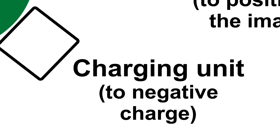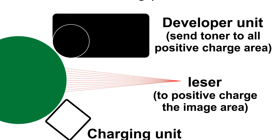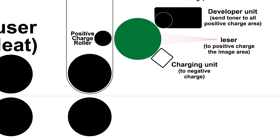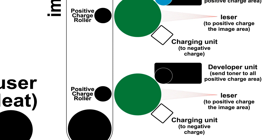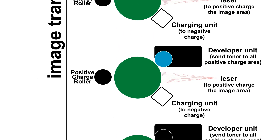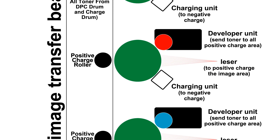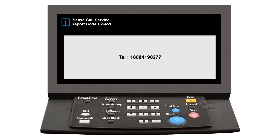Due to this issue the charging unit is unable to negatively charge the OPC drum, and the fully charged OPC drum attracts all toner from the developer unit and creates a solid image in the transfer belt. That's why the OPC drum uses a very large amount of toner without controller instruction, and the yellow toner empties from the developer unit, and the machine shows a low toner density error code.